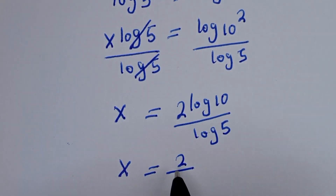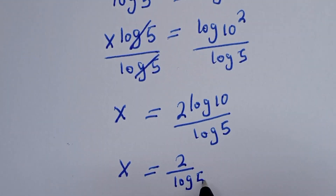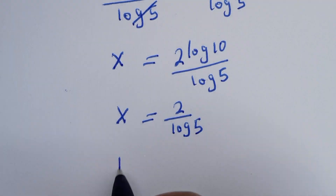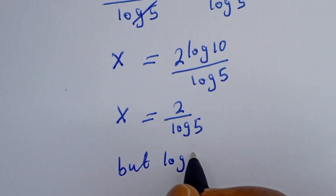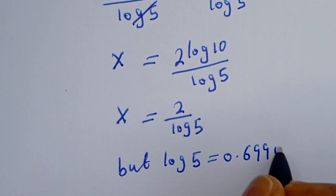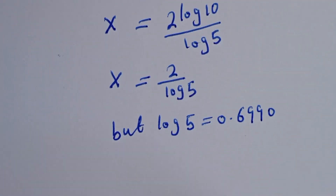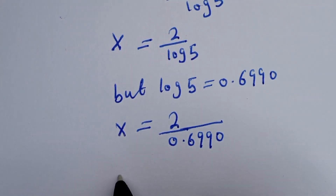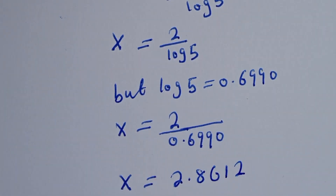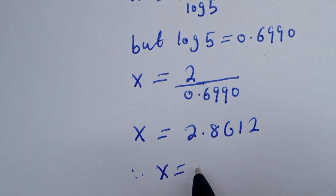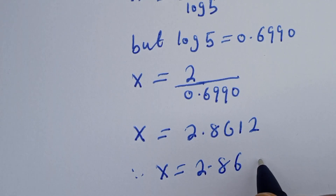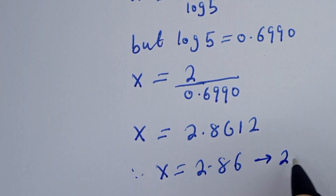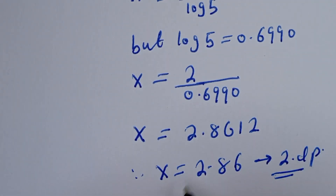We have s equal to 2 divided by log 5. Now log 5 is equal to 0.6990, so we have s equal to 2 divided by 0.6990, which gives s equal to 2.861.